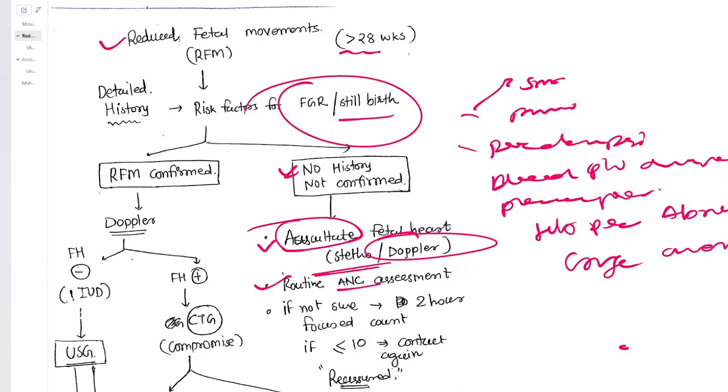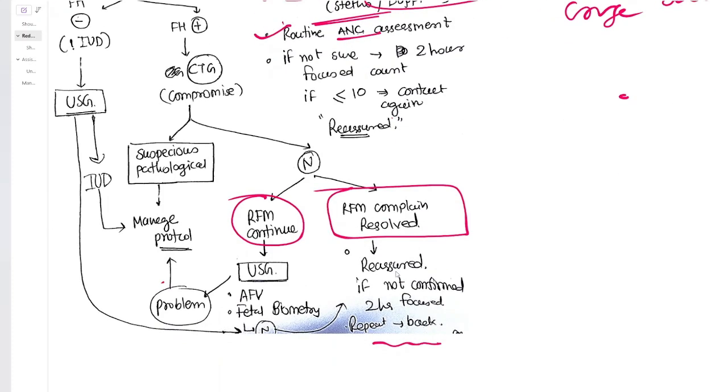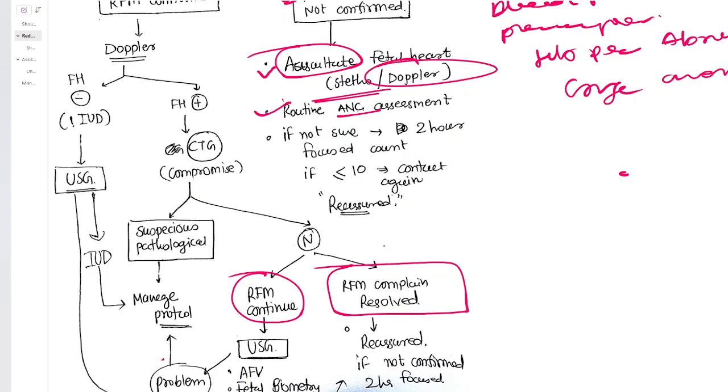If the woman is not sure, then you can advise this technique: do focused watchful monitoring for fetal movements for two hours. If you don't feel more than 10 fetal movements in those two hours, then come back again because that is one of the signs. But if you feel more than 10 fetal movements in two hours, then it's fine and should be alright. Follow the routine ANC guidelines.